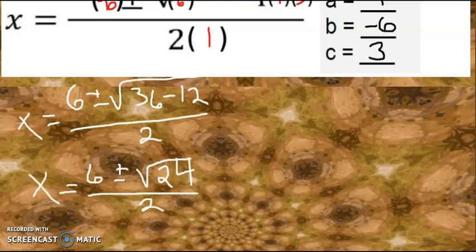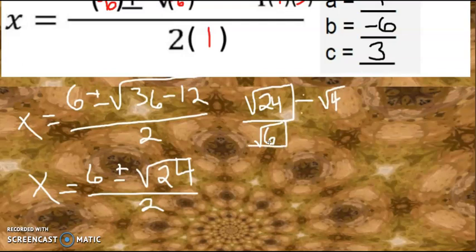We can simplify the square root of 24. Let's go ahead and do that. The first perfect square we can take out is a 4. 24 divided by 4 is 6. 6 is one of those numbers you can't do anything else to, so we just have 2 square root of 6.